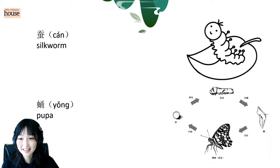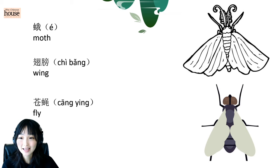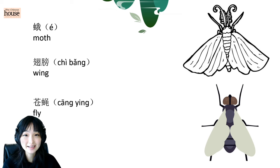And then, silkworm. 蚁蚁. Good. Pupa. 蚁蚁. 蚁蚁. 蚁蚁. Third tone. 蚁蚁. Nice. And then, both. 蚁蚁. 蚁蚁. Good. Wind. 蚁蚂. 蚁蚂. Very good. 蚁蚂.